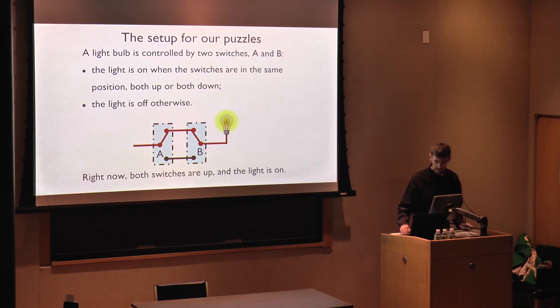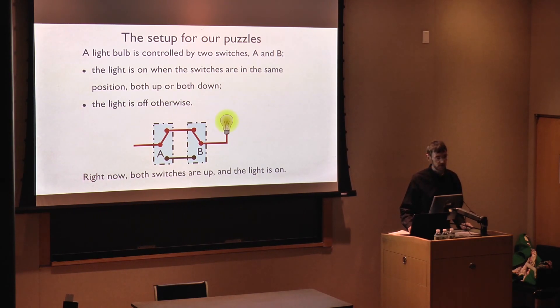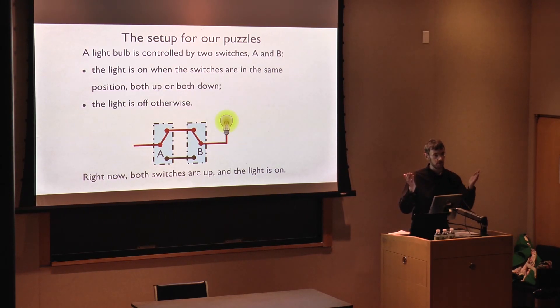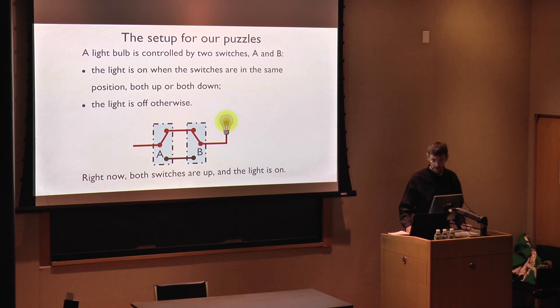So, here is a puzzle. Imagine that we have a light that's controlled by two switches, A and B. And the light is on whenever the two switches are in the same position, both up or both down. Otherwise, if they're in different positions, the light is off. Now, imagine that things right now are like on this picture here. Both switches are up, so the current flows to the top cable and it reaches the light, so the light is on.